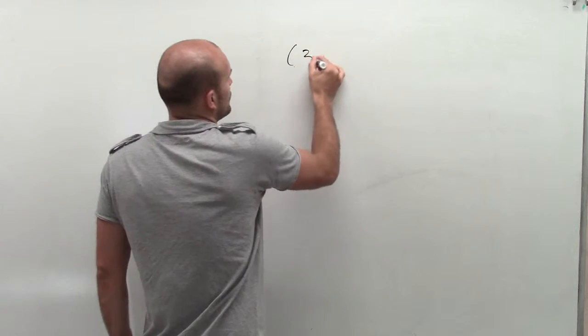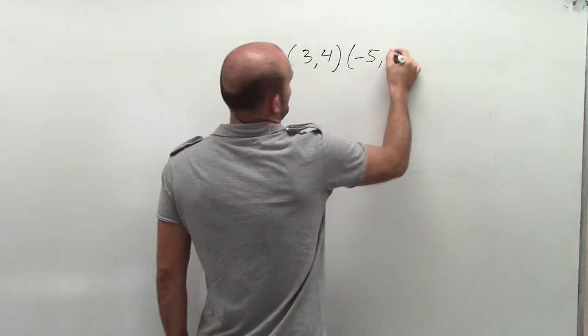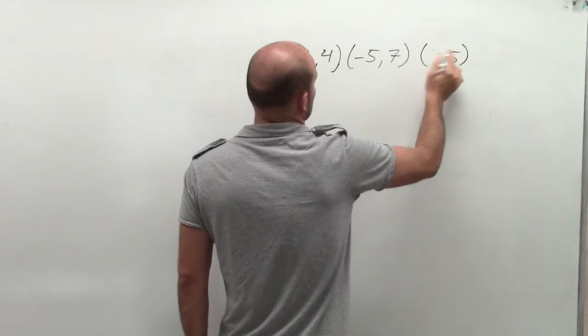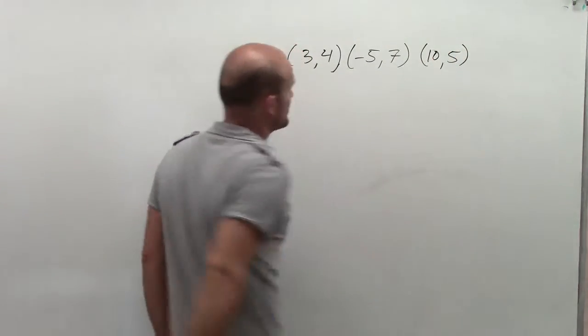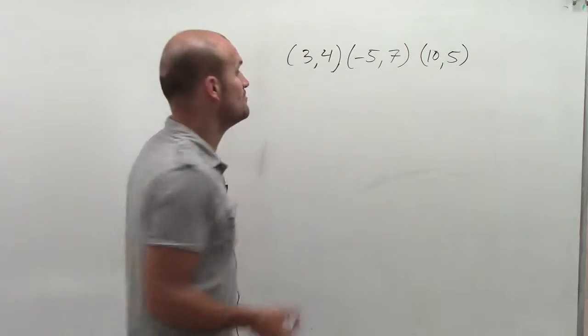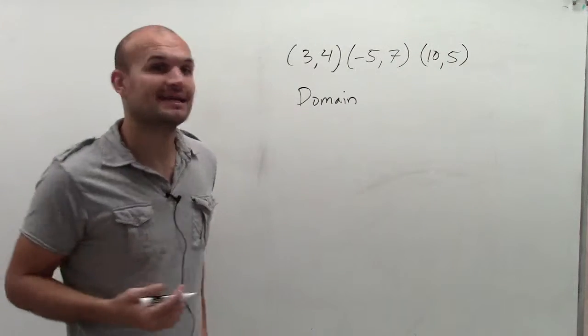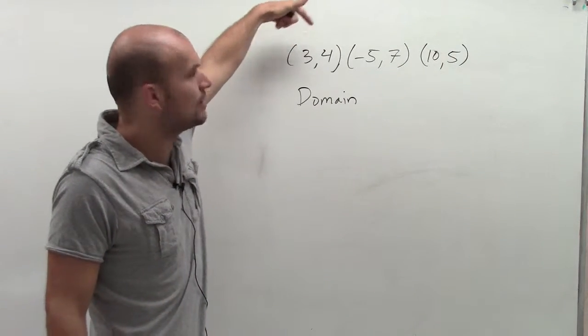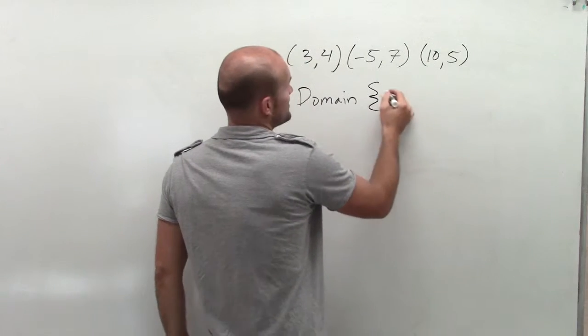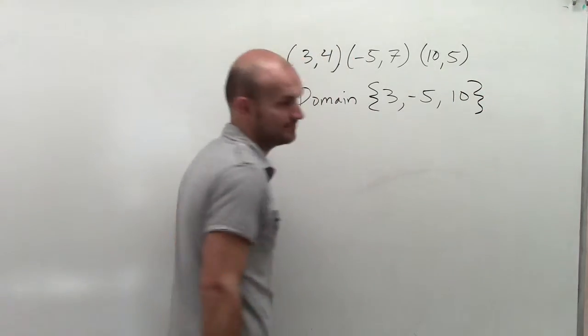So, let's say I wanted to write an ordered pair. Let's say I write a relationship in ordered pair. The domain, your domain is going to be the set of all of your x values. So, the domain in this problem is going to be 3, negative 5, and 10.